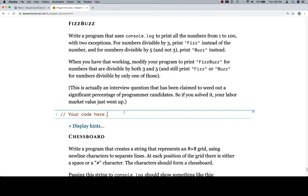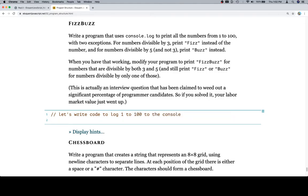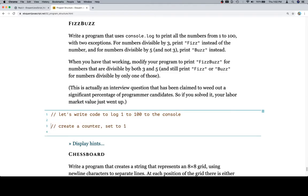So, a couple of things that we might want to start out with. The first thing would be, let's write code to log 1 to 100 to the console. Can't hurt to start there. I'm going to go with a while loop again. So we'll say, create a counter set to 1. And we'll put a space in between those.